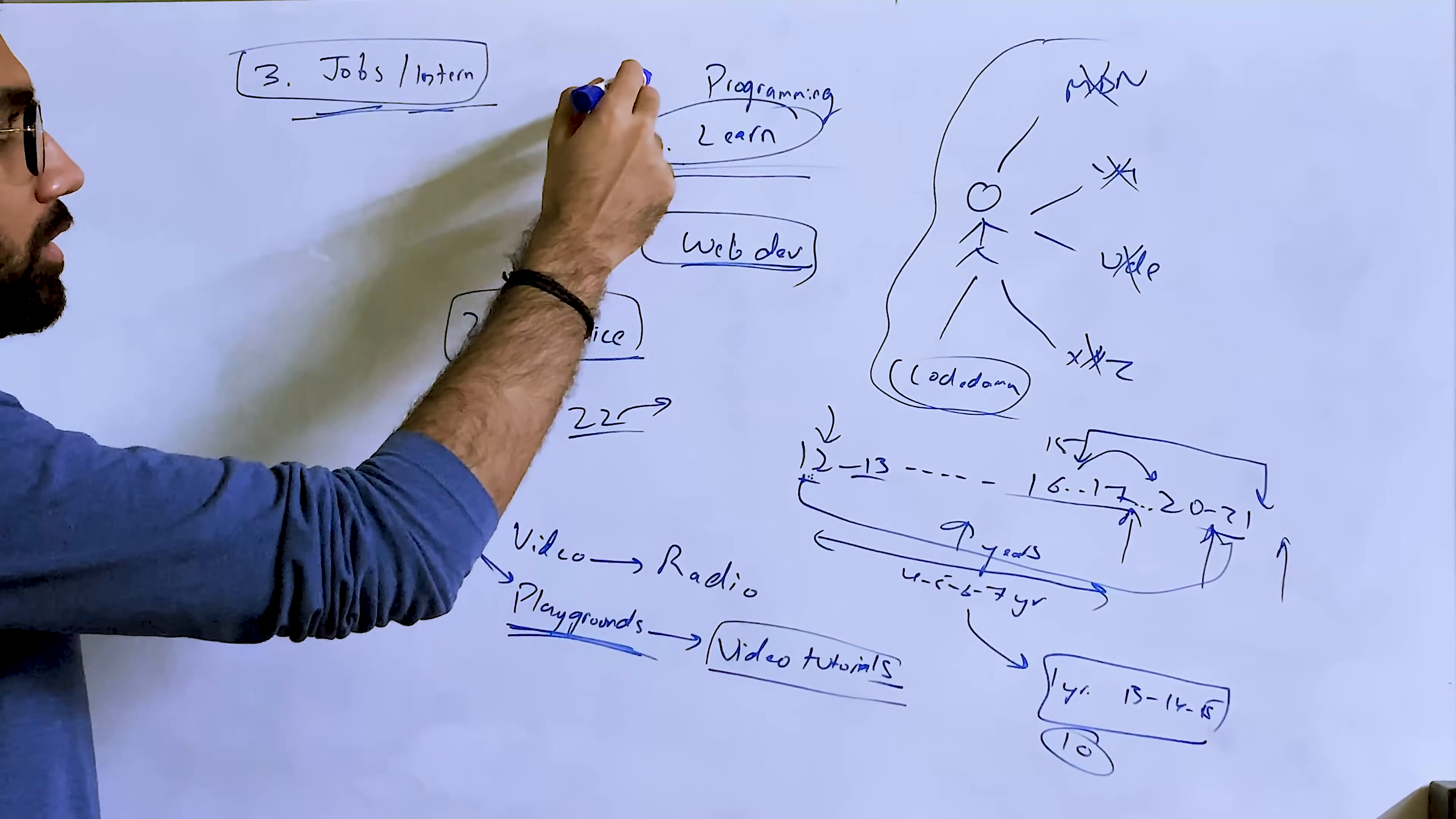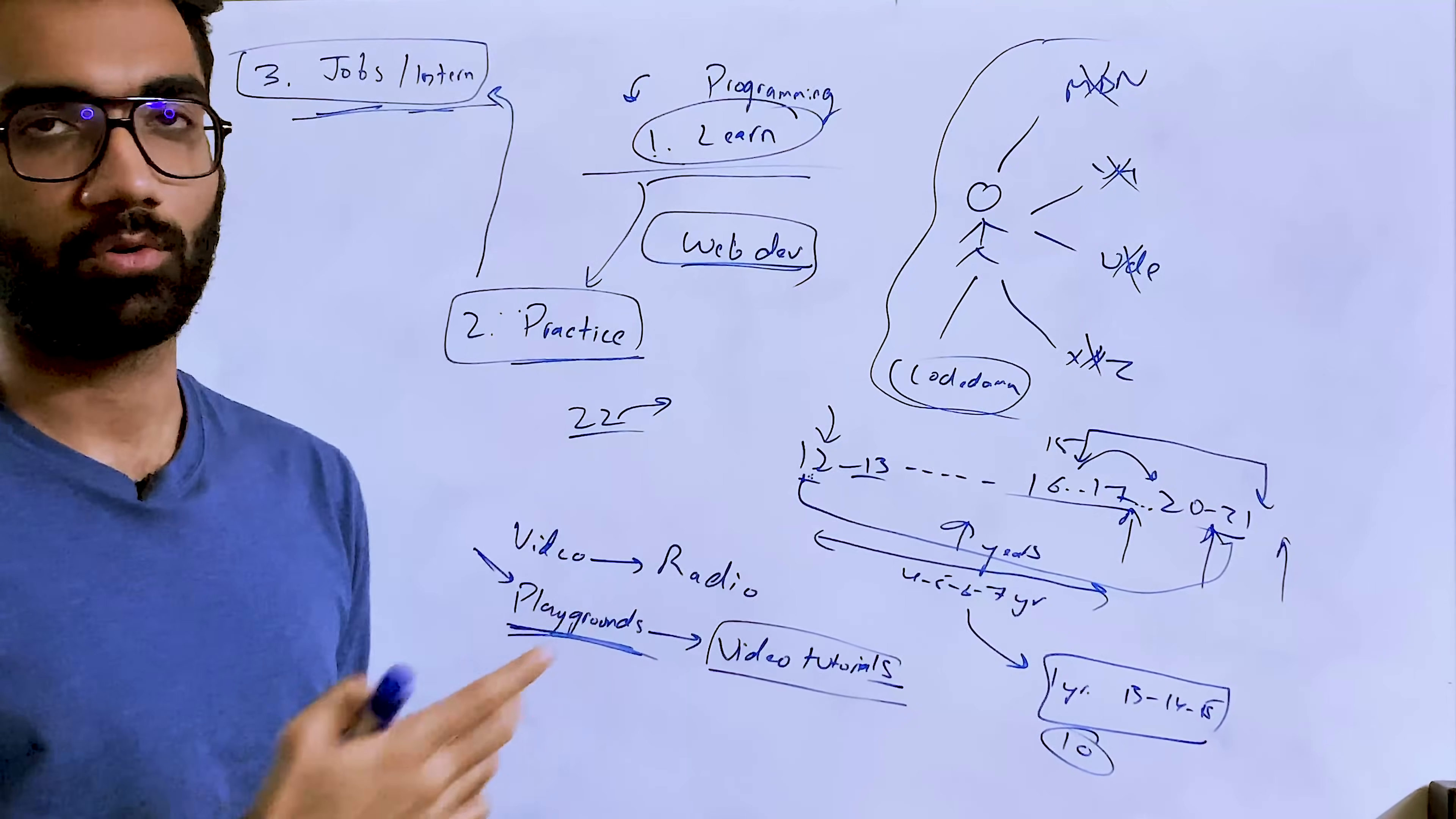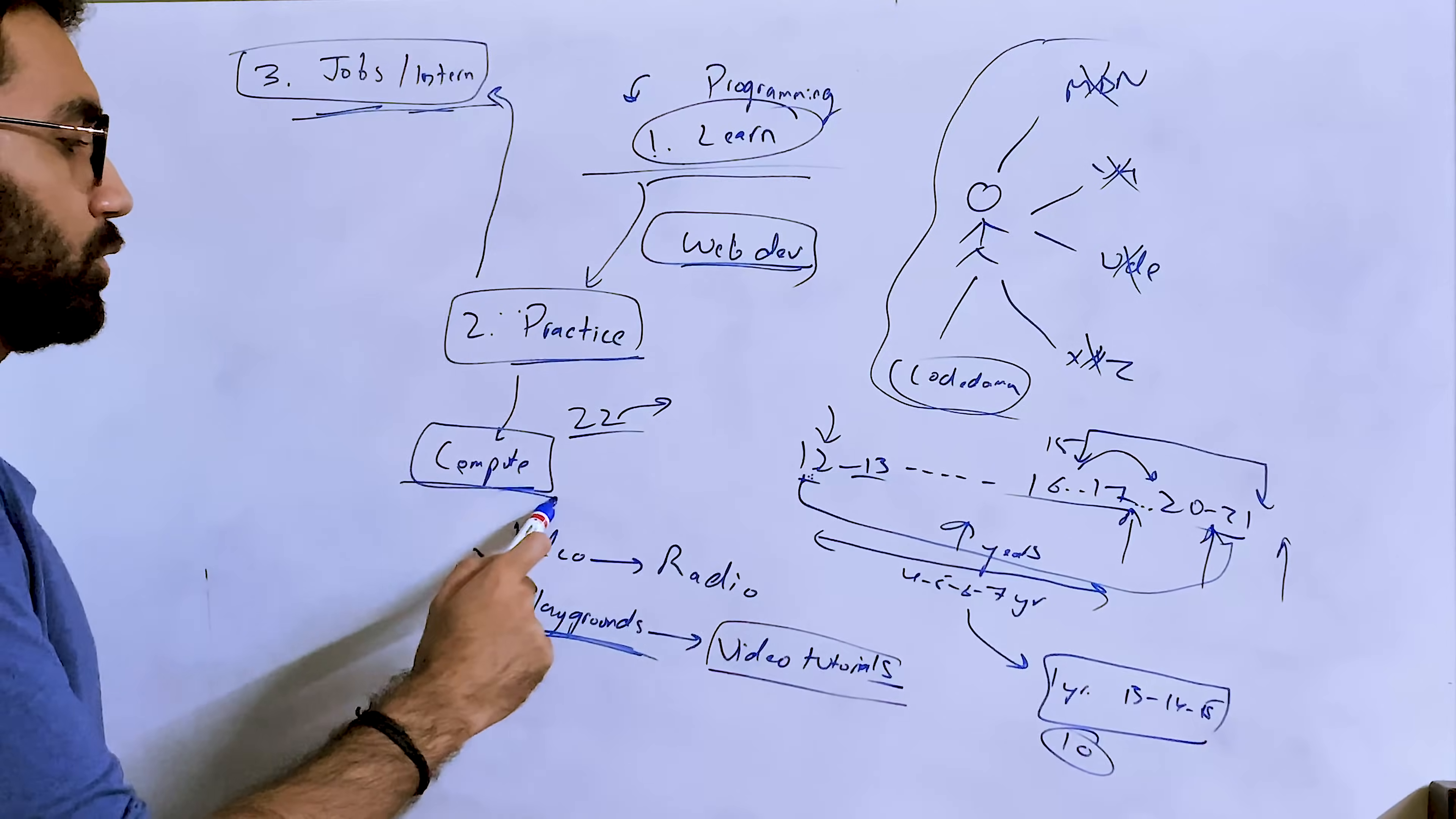What I realized was that people want to learn, then people want to practice, and then people also want to get a job and an internship. This is something we are actively working on right now to integrate as a core value of the product. So far we have learning as the core value, practicing as the core value. I haven't announced here yet, but we have also made the compute part on Codedamn fully free. That means you can launch playgrounds, practice in them, create standalone projects for completely free.